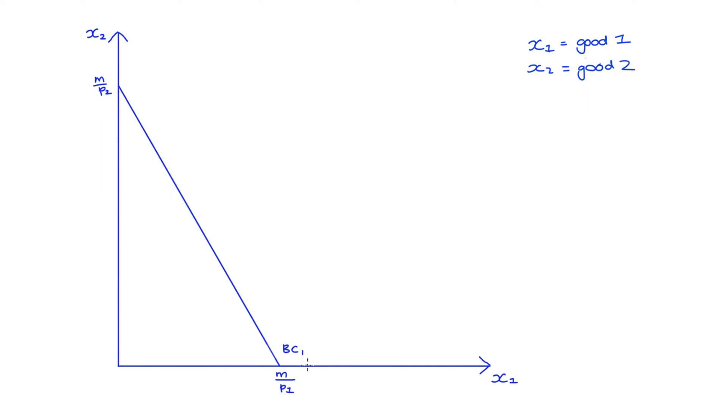So that budget constraint I called it BC1. Lastly I have some indifference curves which are a visual representation of our preferences between good one and good two. I've also noted down here that P1 denotes the price of good one, P2 denotes the price of good two, and our income is denoted M.